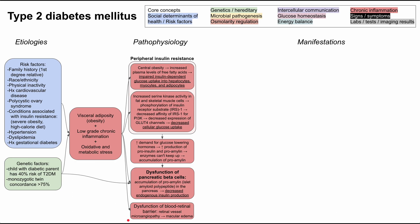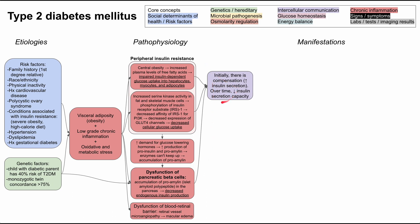Another pathophysiology worth knowing involves the blood-retinal barrier, where microangiopathy of the retinal vessels can lead to macular edema, which can affect vision. These pathophysiologies of type 2 diabetes usually don't happen suddenly. Initially, the body compensates by secreting more insulin. Over time, insulin secretion capacity decreases due to the dysfunction of pancreatic beta cells, and the body can no longer secrete insulin as effectively.